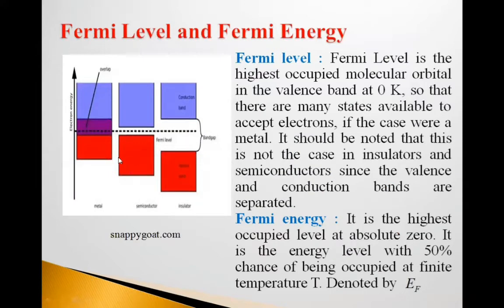So students, see this diagram. Here, electron energy is going in the vertical direction and this is for metal, this is for semiconductor, this is for insulator. For metal, valence band is shown by this orange color, conduction band is shown by this blue color. Valence band and conduction band overlap in case of metal. In case of semiconductor, this valence band and conduction band, there is a gap. In case of insulator, the band gap is large as compared to these two others.